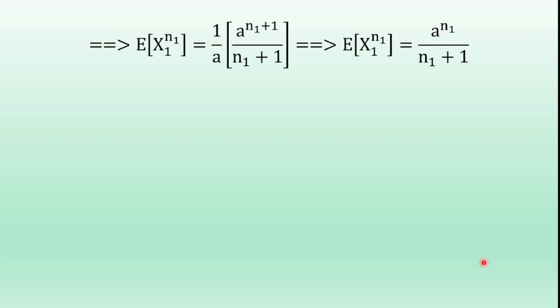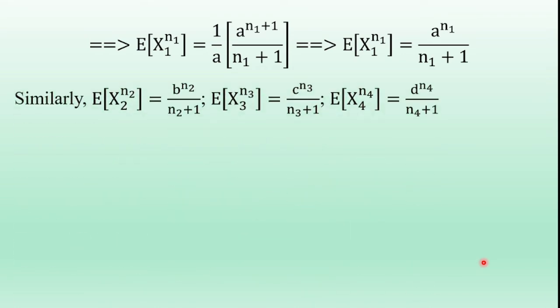In the same manner, E[x2^n2] = b^n2 / (n2+1), E[x3^n3] = c^n3 / (n3+1), and E[x4^n4] = d^n4 / (n4+1).